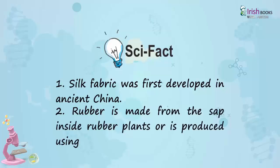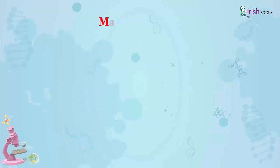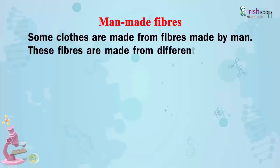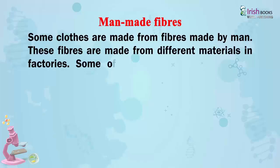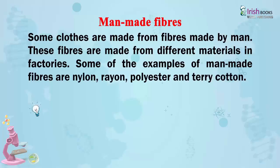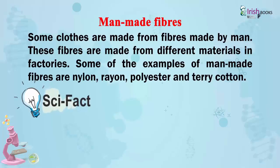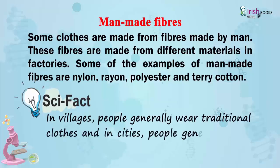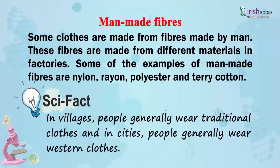Rubber is made from the sap inside rubber plants or is produced using chemicals. Man-made fibres: Some clothes are made from fibres made by man. These fibres are made from different materials in factories. Some examples of man-made fibres are nylon, rayon, polyester and terry cotton. In villages, people generally wear traditional clothes and in cities, people generally wear western clothes.